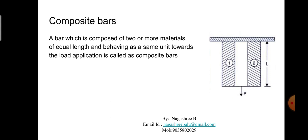In order to analyze a composite bar, some basic important assumptions are necessary. First, the extension or compression in each bar is equal. Second, the total external load on the composite bar is equal to the summation of loads carried by each individual material.